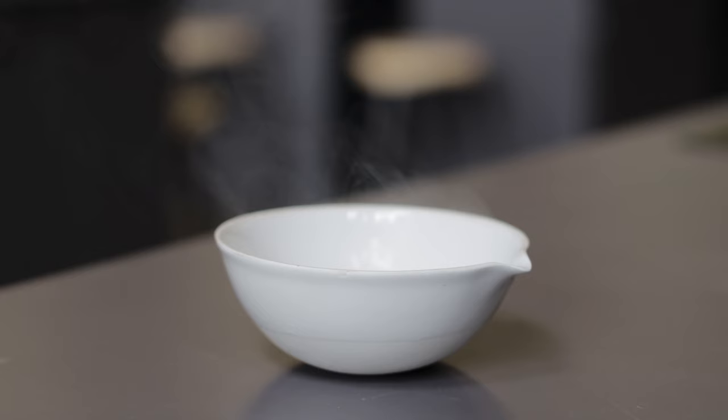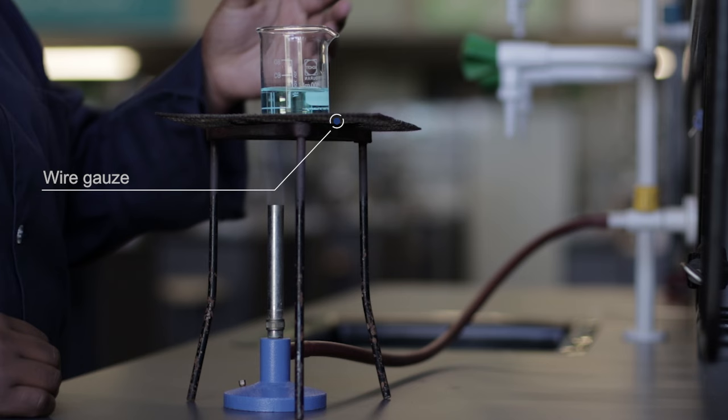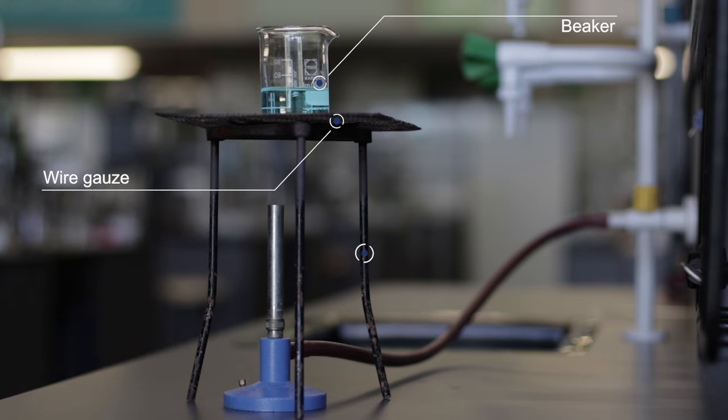The evaporation dish is used for the evaporation of a solution. Wire gauze is placed between the beaker and the tripod to support the beaker while heating the solution with a Bunsen burner.